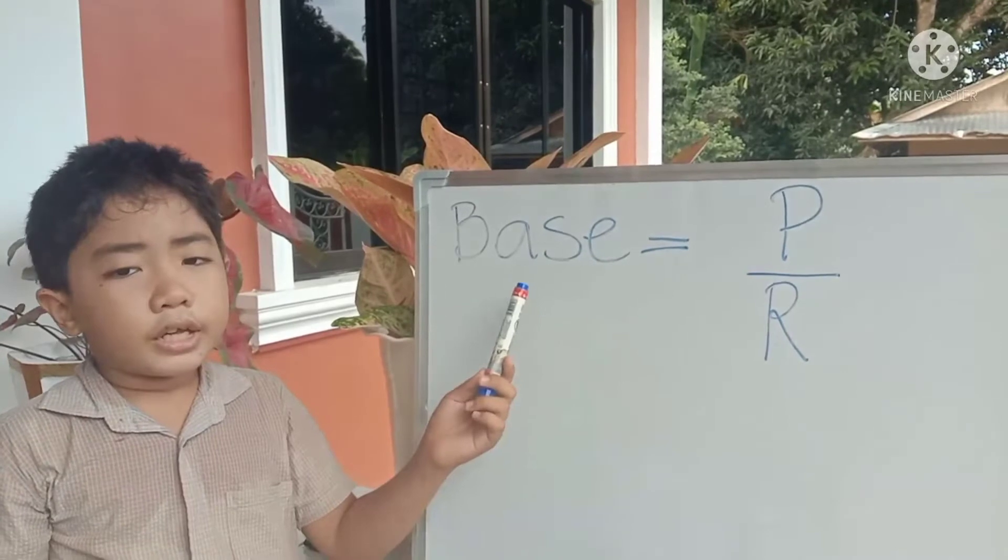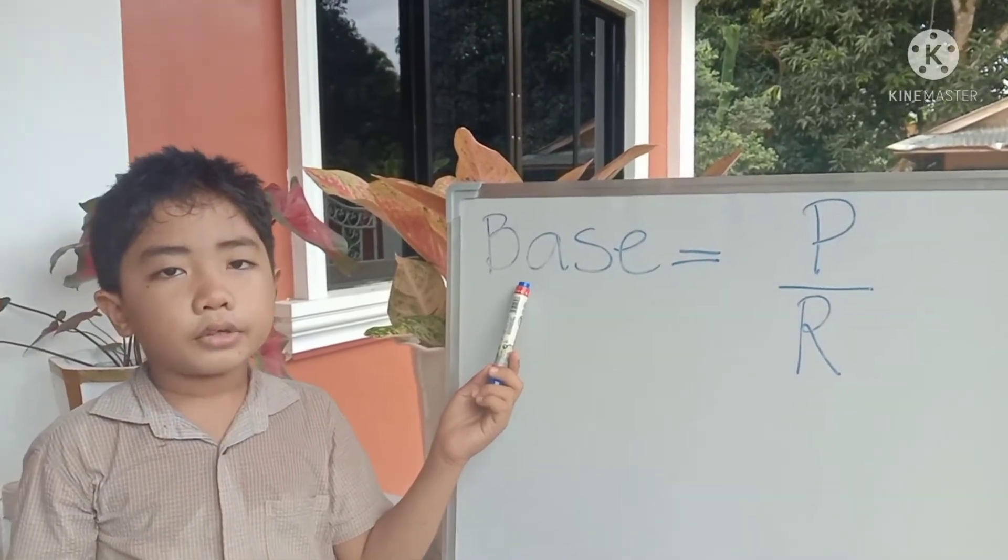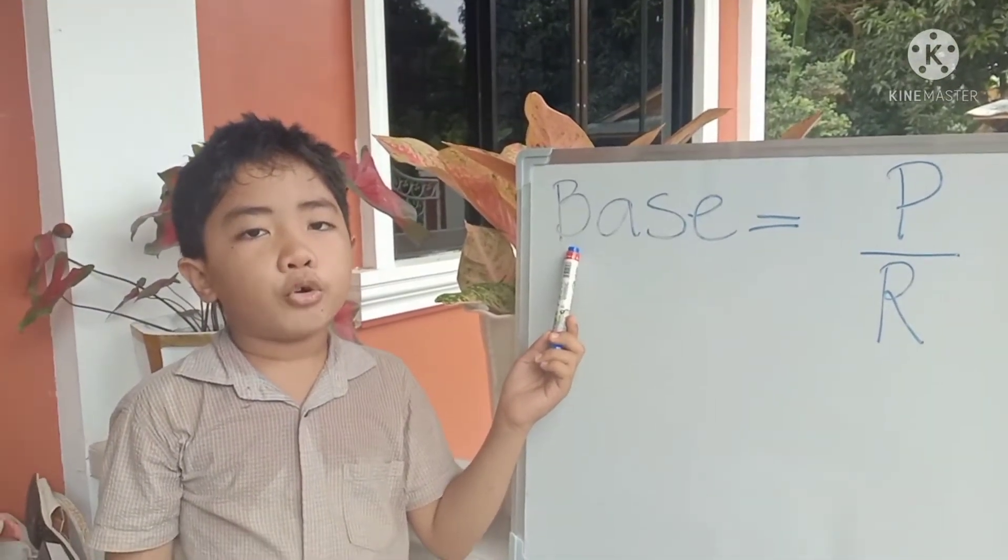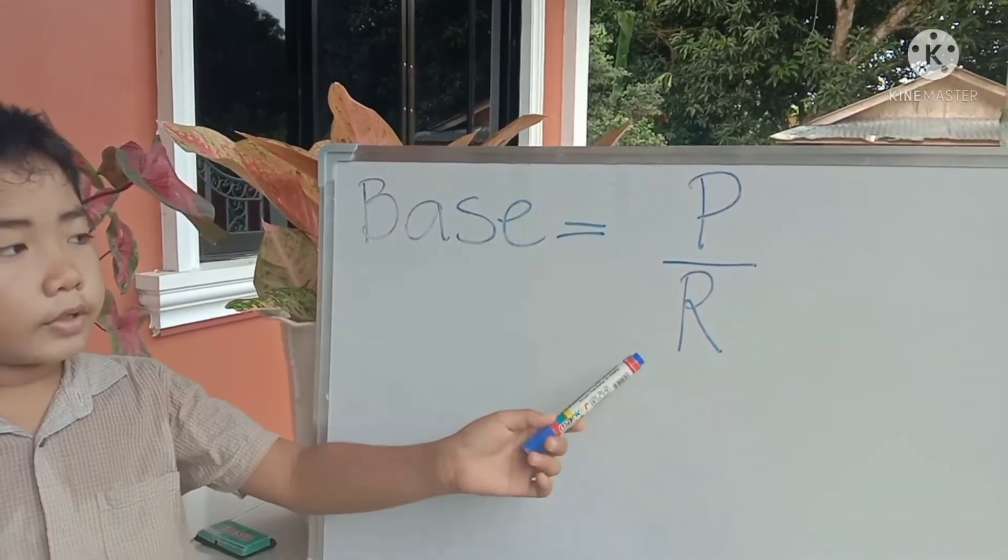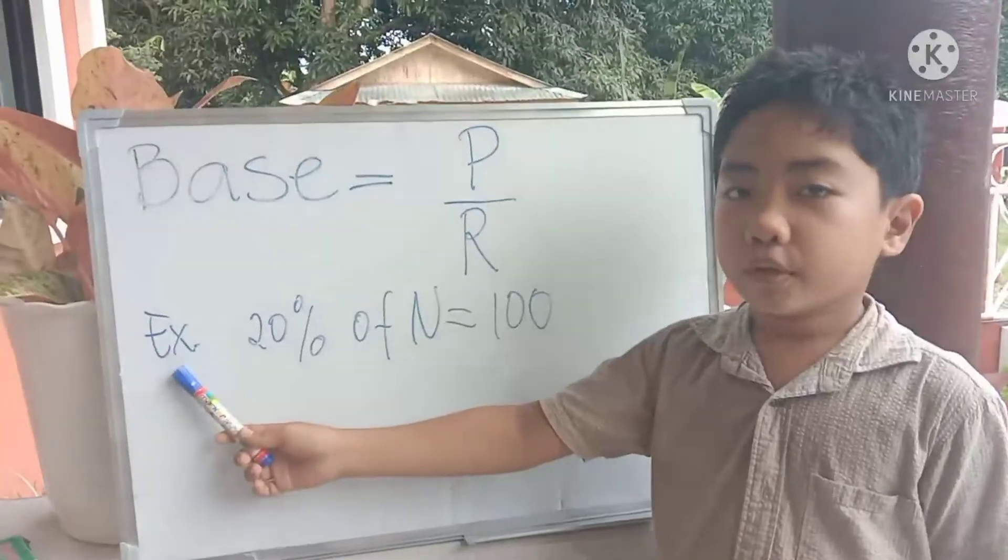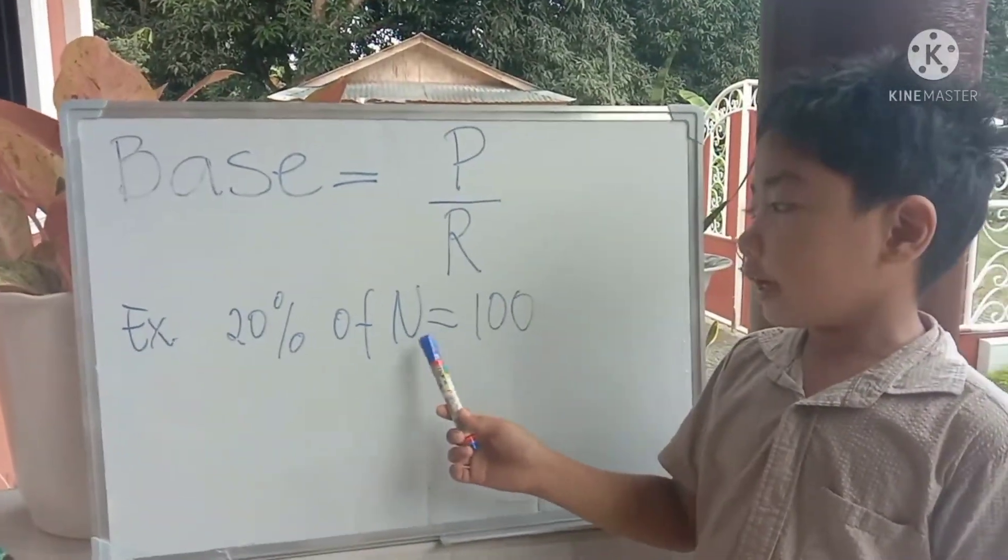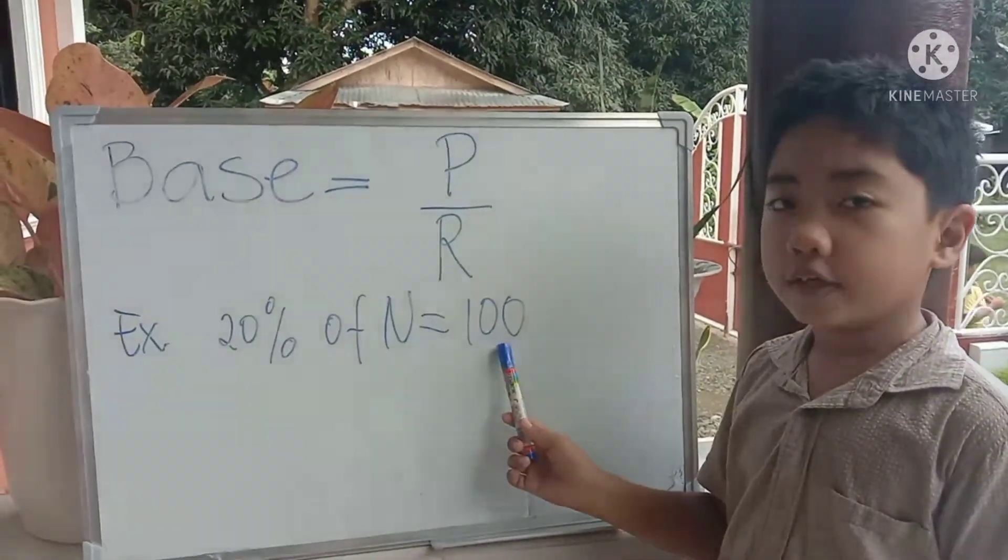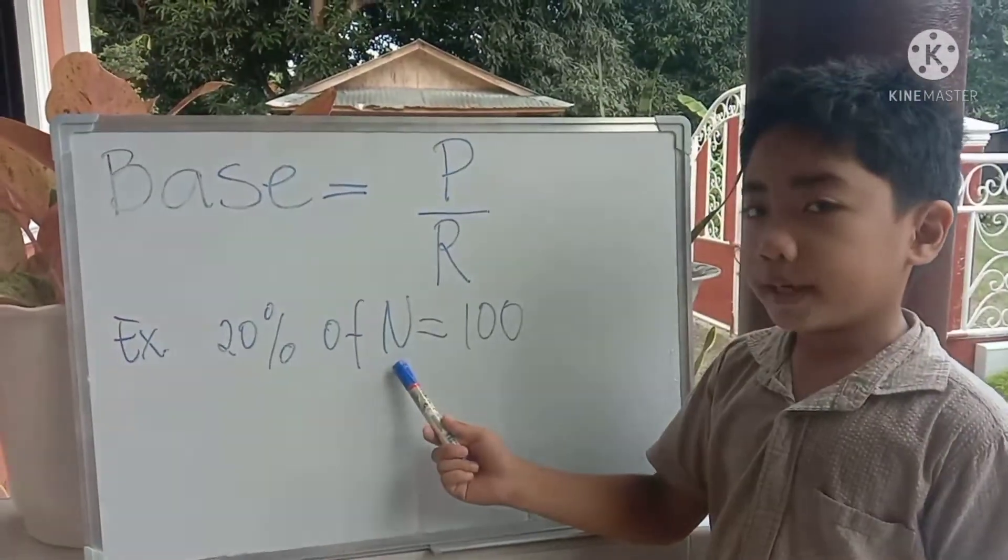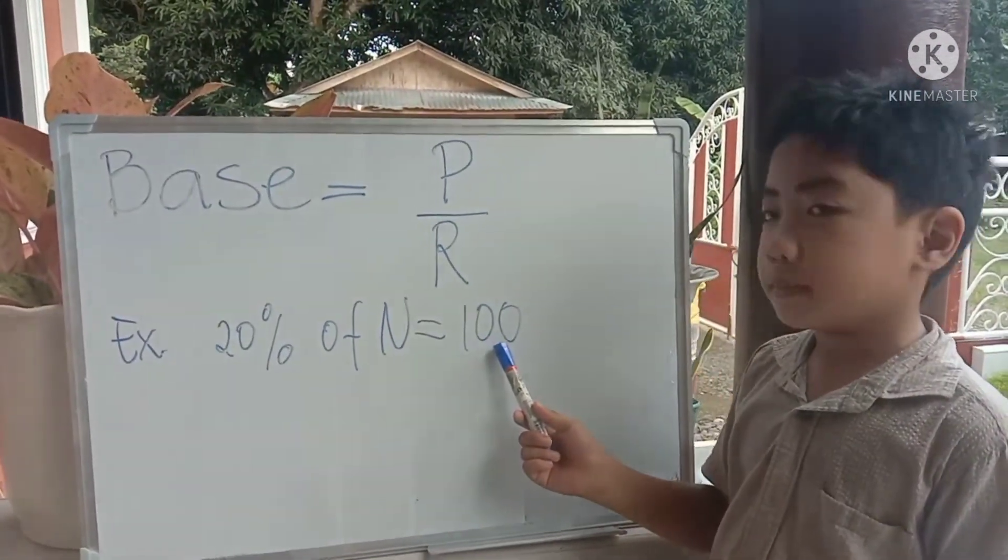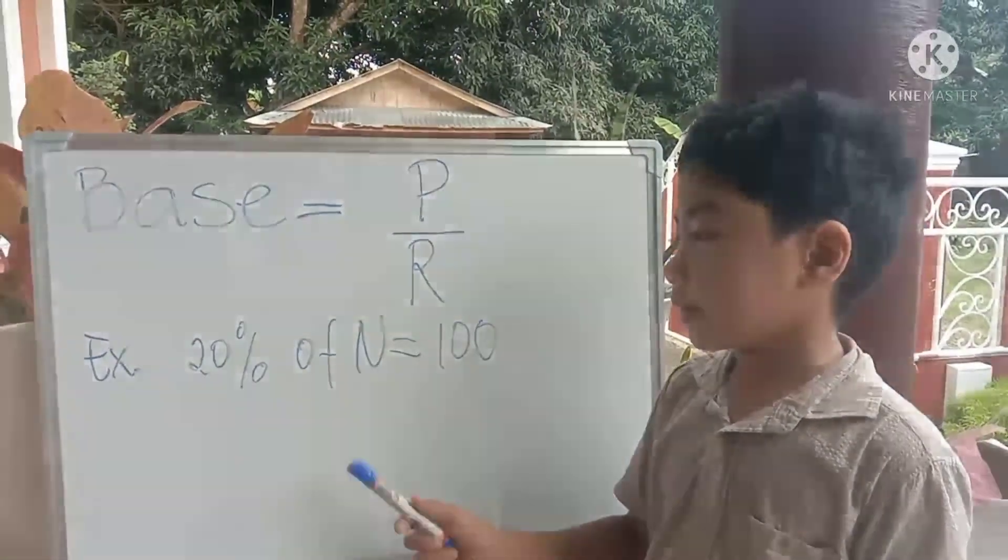So, base is the number or amount that represents the whole. To find base, percentage over rate. For example, 20% of N equals 100. 20% is rate, N is base, 100 is percentage. We're going to find the base.